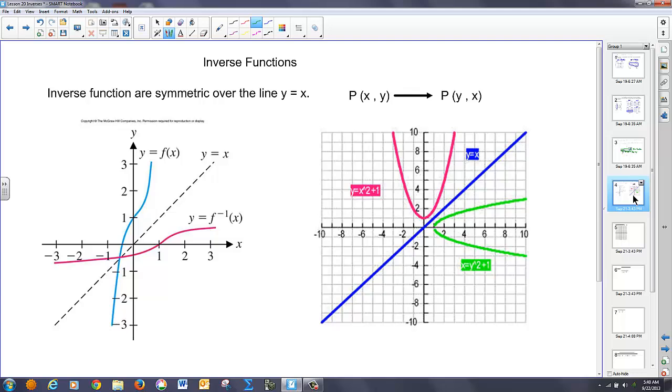We talk inverse functions, we talk about, graphically at least, functions being symmetric over the line y equals x, so I've drawn a couple here. When something's symmetric, it basically folds over. In other words, this line of symmetry, y equals x, will be a perpendicular bisector between the two reflected functions, so that point there is equidistant from this point here over that line, and you'll notice both of these kind of fit that bill.